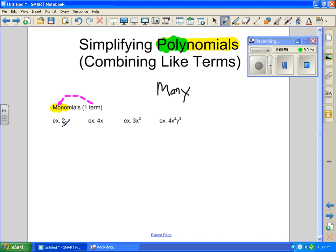So if you notice, here's some examples. See, just the number 2, number 4x, 3x cubed, 4x squared, y cubed. It's just one thing.